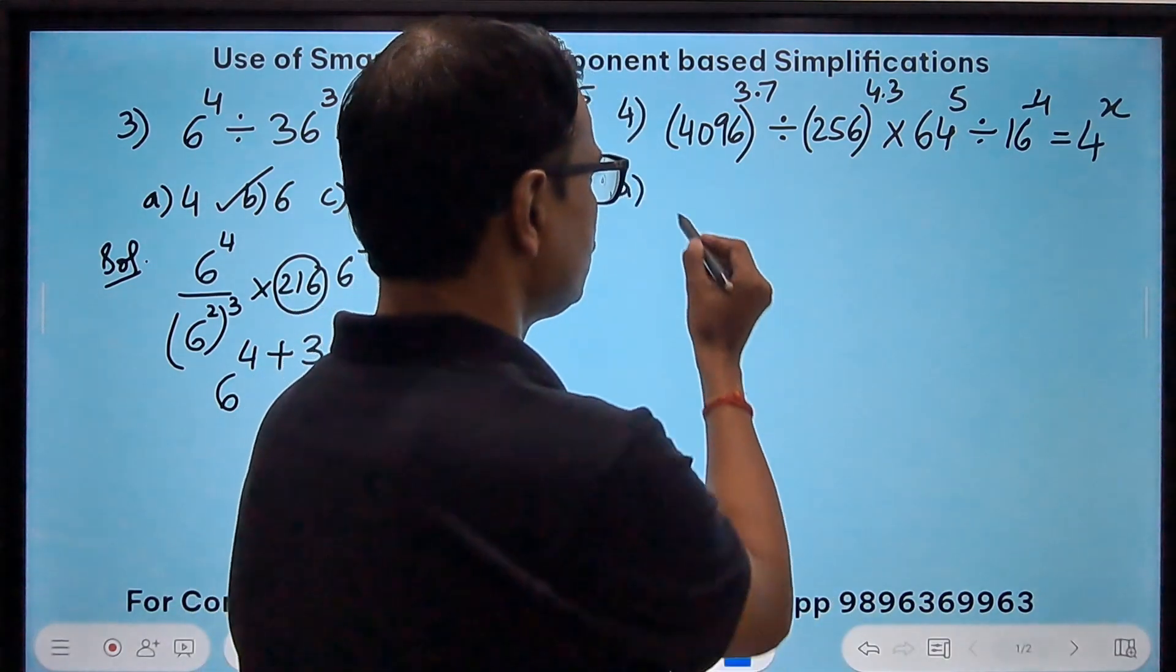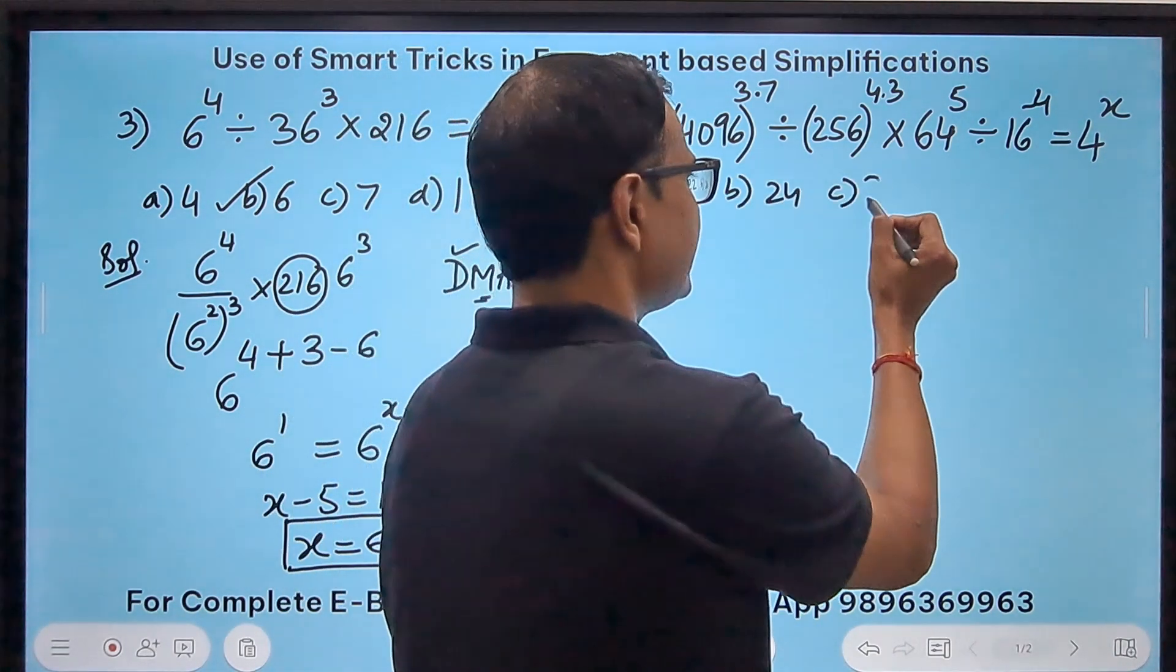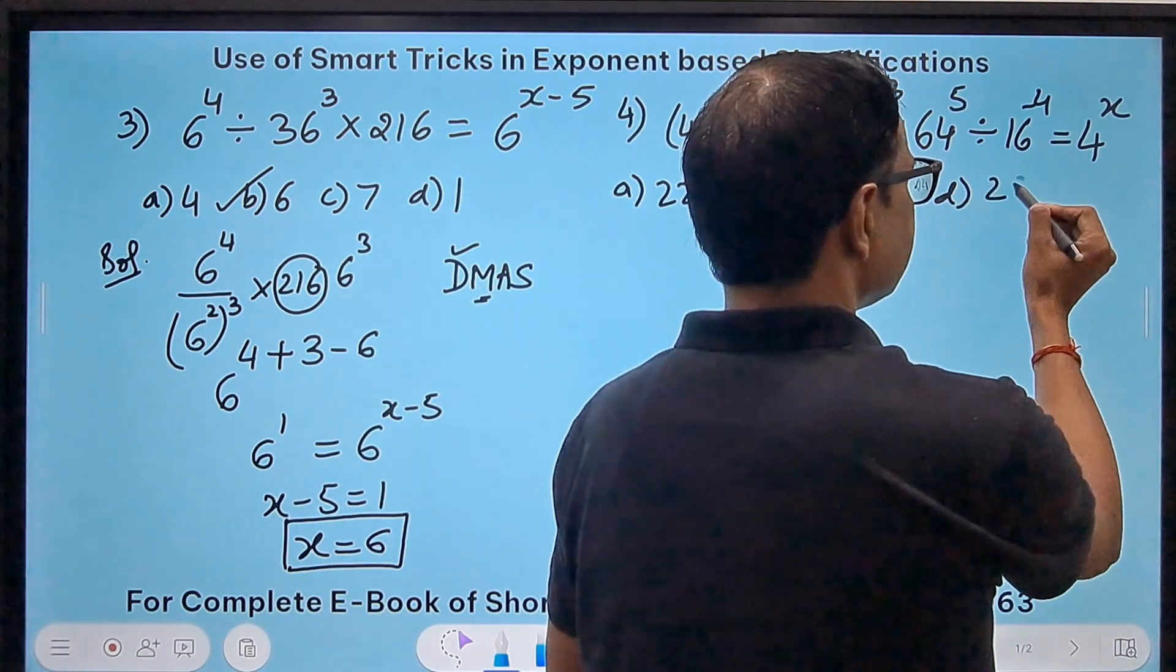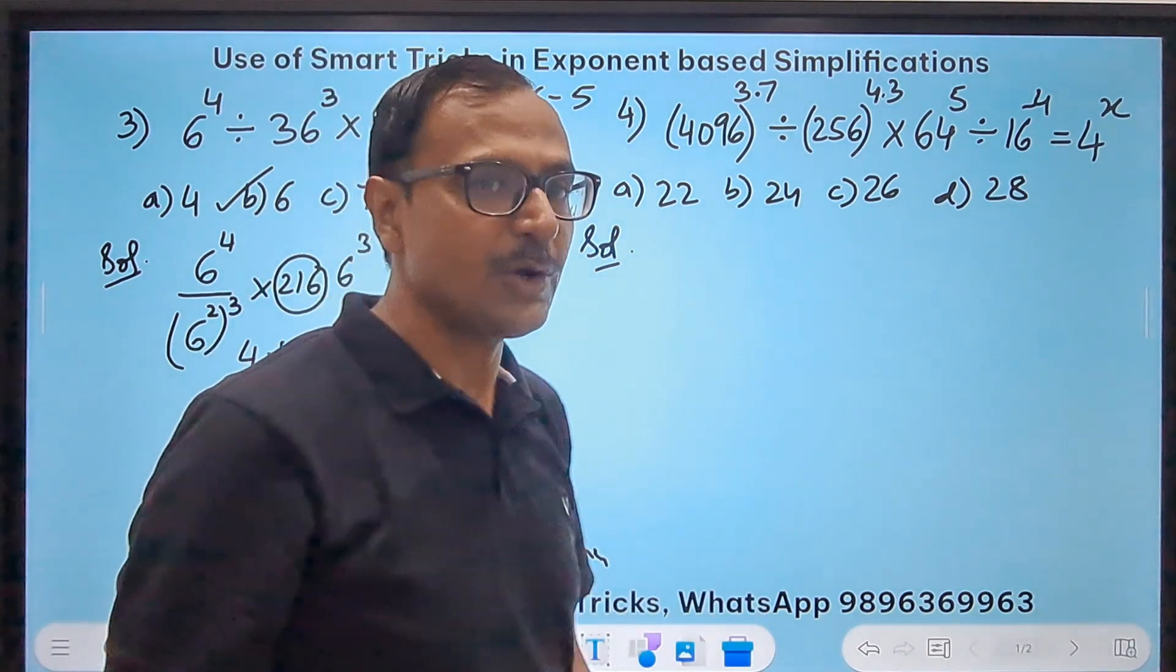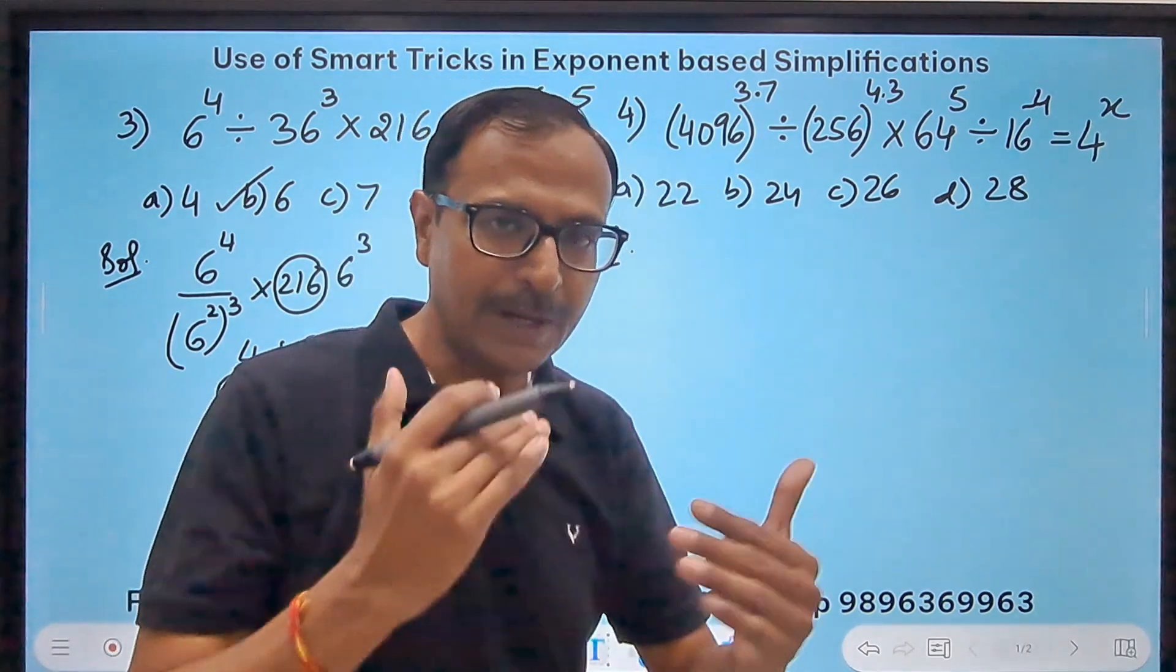So what are the options given here? The options are 22, 24, 26, and 28. There are 4 options given to us. Now you can again pause the video and try it yourself. Check the time, how much time you are taking to solve this. And now play it from here.